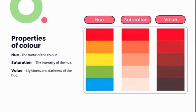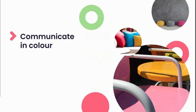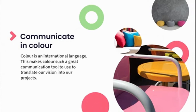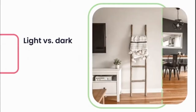A hue simply means the name of the color. Color is an international language that everyone understands across the globe, making it a great communication tool to translate our vision into reality. To use color with skill, we need to understand the behavior of color and how it influences the mood and feel within each space. Colors have the power to change the character within a space — not only each different hue, but also when the saturation and value have been altered, giving them psychological power depending on how the designer incorporates that color.